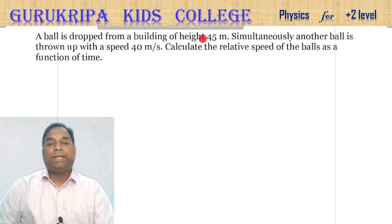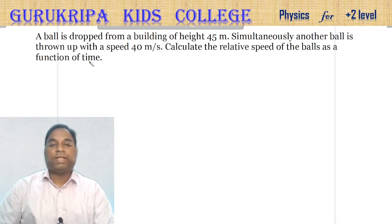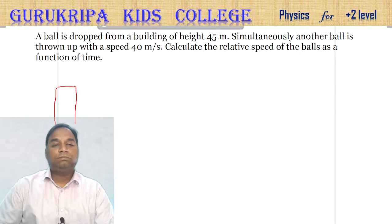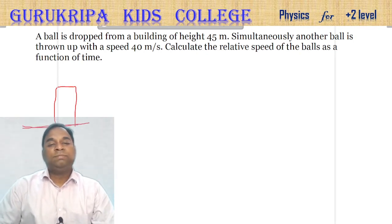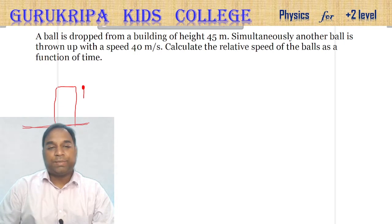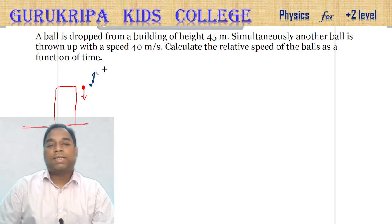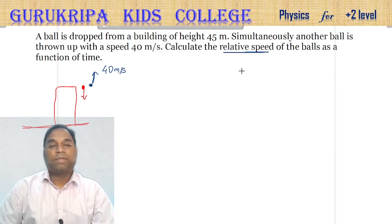A ball is dropped from a building of height 45 meters. Simultaneously, another ball is thrown upward with a velocity of 40 meters per second. Calculate the relative speed of the balls as a function of time. The building height is 45 meters.